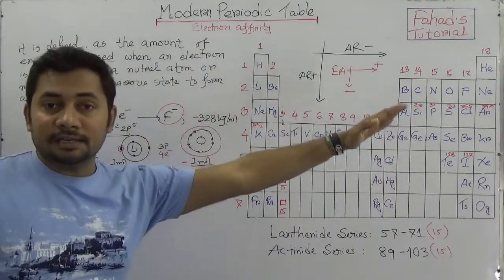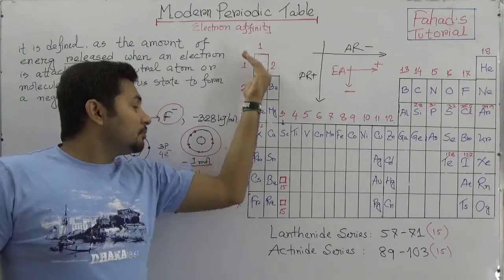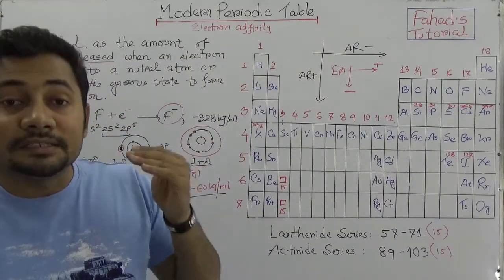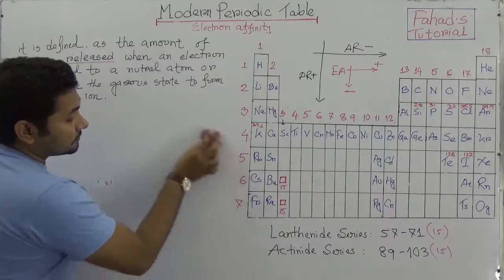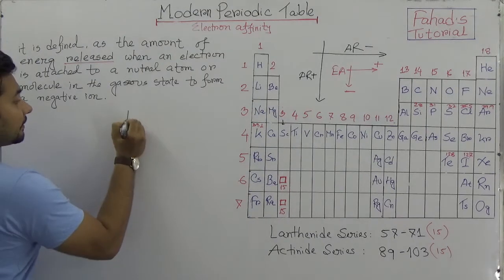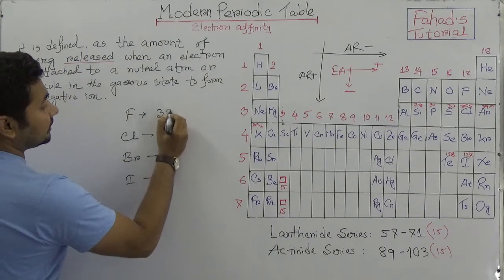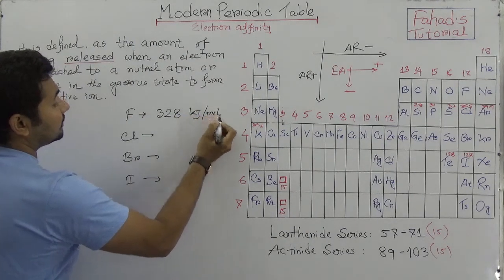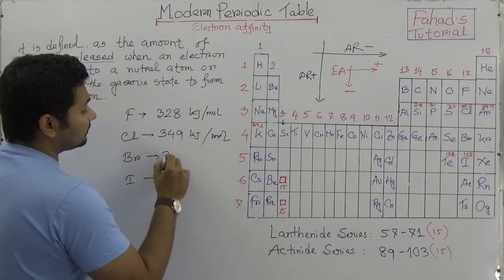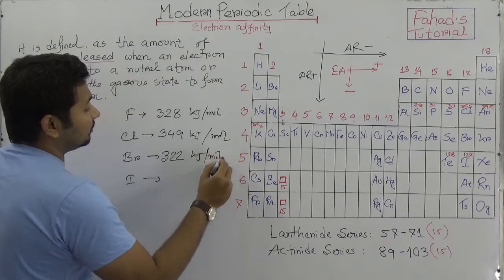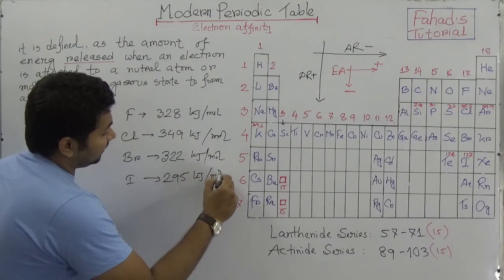Going from left to right, electron affinity increases. Going from top to bottom in a group, electron affinity decreases. For example, in group 17 — fluorine, chlorine, bromine, iodine — the electron affinity values are 328, 349, 322, and 295 kilojoule per mole respectively. Note that chlorine's value is slightly higher than fluorine's — this is an important exception to the general trend.